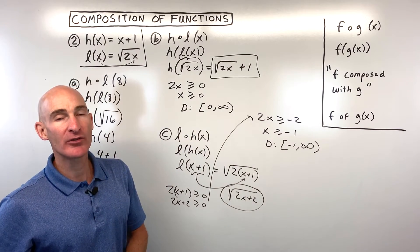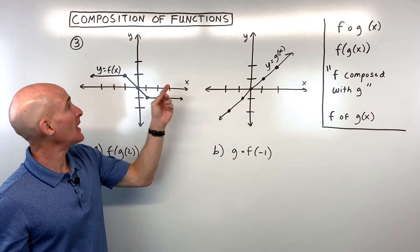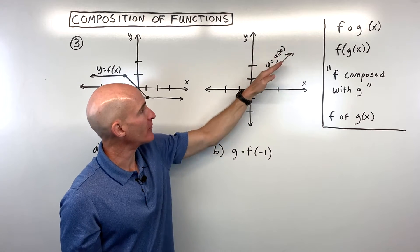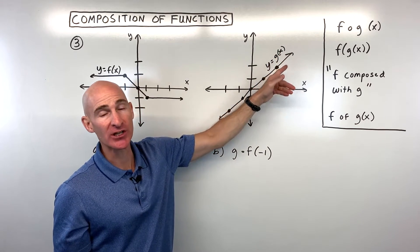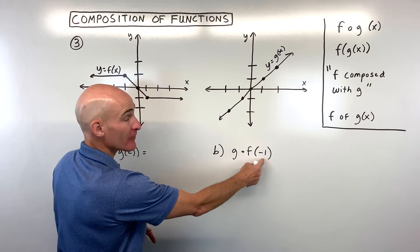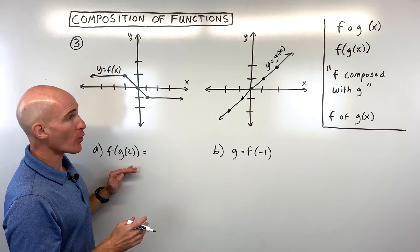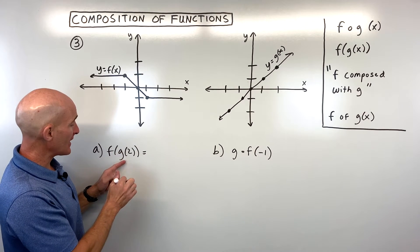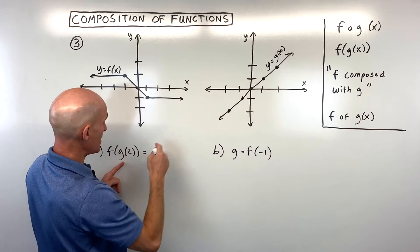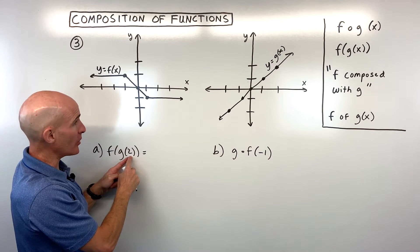Let's look at another example. For example number 3, we're given a couple of graphs — this is the graph of f of x, and this is the graph of g of x. We want to find f of g of 2 and g of f of negative 1. Starting on the inside with g of 2, we go to our g function. Whatever's in parentheses is our x coordinate — our input.